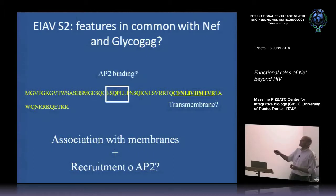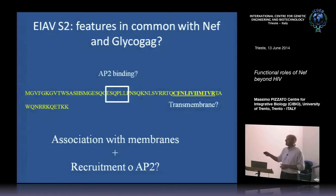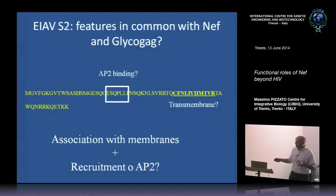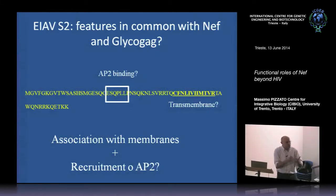The common denominator seems to be this endocytic pathway. We just found a possible AP2 adaptor protein binding motif also in S2, and we're currently testing whether this is also crucial for what S2 does to virus infectivity. Additionally, all three proteins associate with membranes: glycoGAG and S2 have transmembrane domains, and NEF is myristoylated. These two components — membrane association and AP2/endocytic pathway recruitment — appear to be a common denominator of these functionally convergent factors.